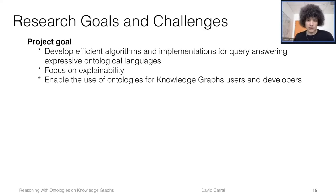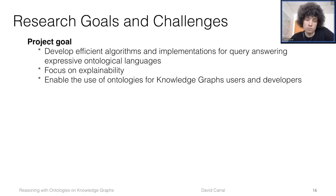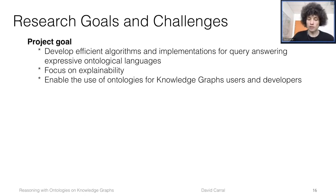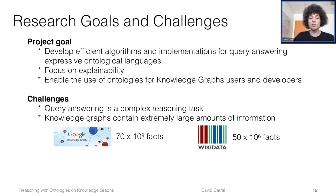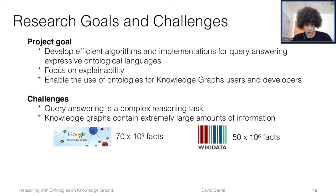I'm going to speed up and finish with my research goals. I would like to develop efficient algorithms and implementations for query answering with expressive ontological languages. I'm going to focus on explainability, and my end goal is to enable the use of ontologies and logical languages on top of knowledge graphs for both users and developers. The challenges are that query answering is a complex reasoning task both theoretically — requiring study of complexity, decidability — and practically, as it's always challenging to develop implementations that are efficient in the presence of very large amounts of facts such as those found in knowledge graphs.